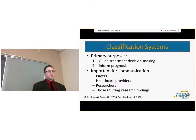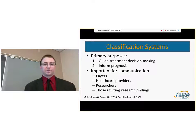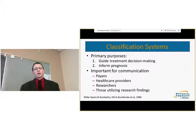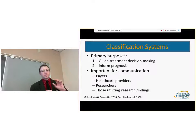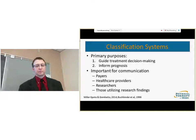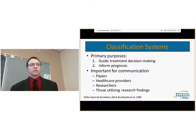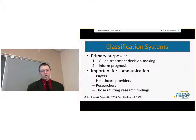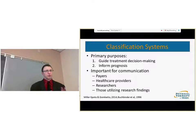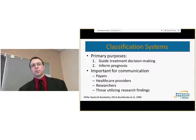Classification is also important for communication — between payers, healthcare providers, researchers, and clinicians utilizing research findings. You need mutually exclusive groupings and identifiable subgroups within the overall population. Multiple classification systems exist for the shoulder, but the problem is they're either not mutually exclusive, not complete, or they don't help guide rehabilitation. Some are solely based on irritability, some solely on pathoanatomy — but for non-operative rehabilitation, you need more than just that.